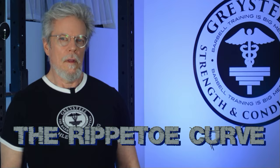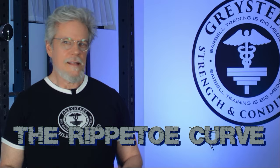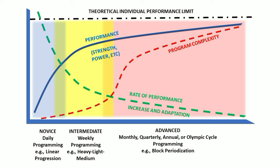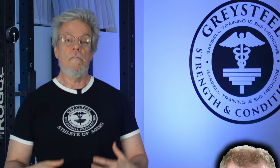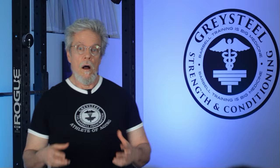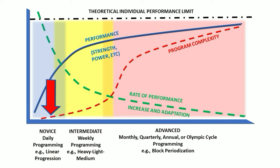Of course, it's actually a family of curves plotted over a timewise abscissa or x-axis, depicting the progression of strength or other trained physical performance attribute with program complexity, rate of adaptation, and theoretical performance limitation — which is itself a manifold function of genetic endowment, phenotypic variation, age, psychological factors, and whatnot — along with the corresponding program and athlete designations: novice, intermediate, advanced.